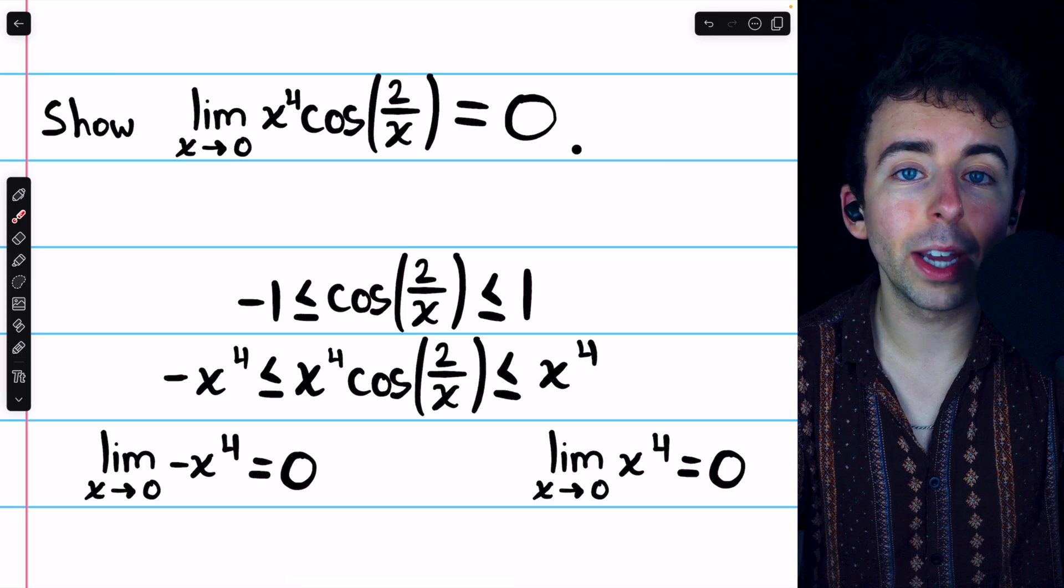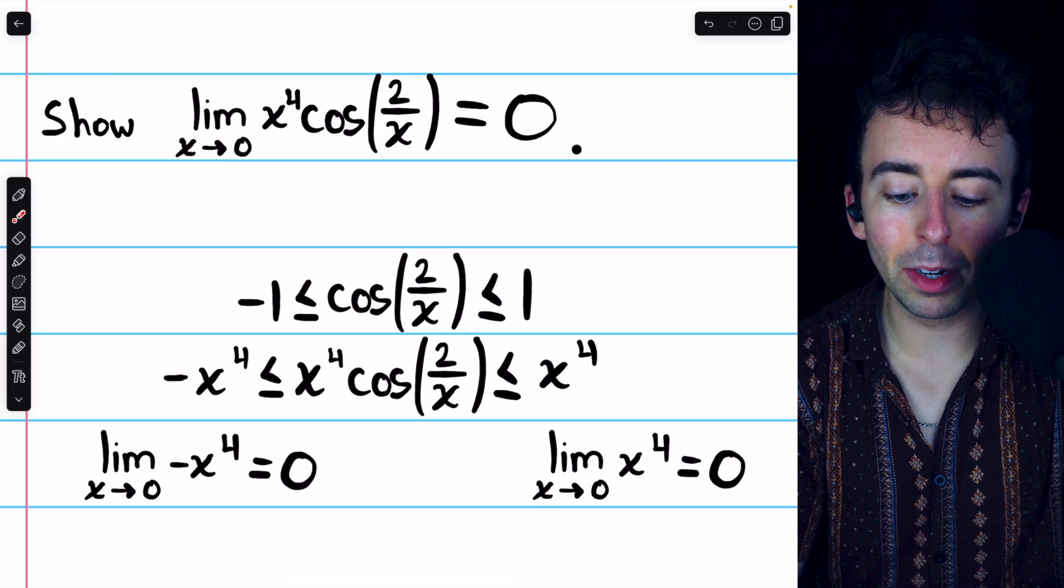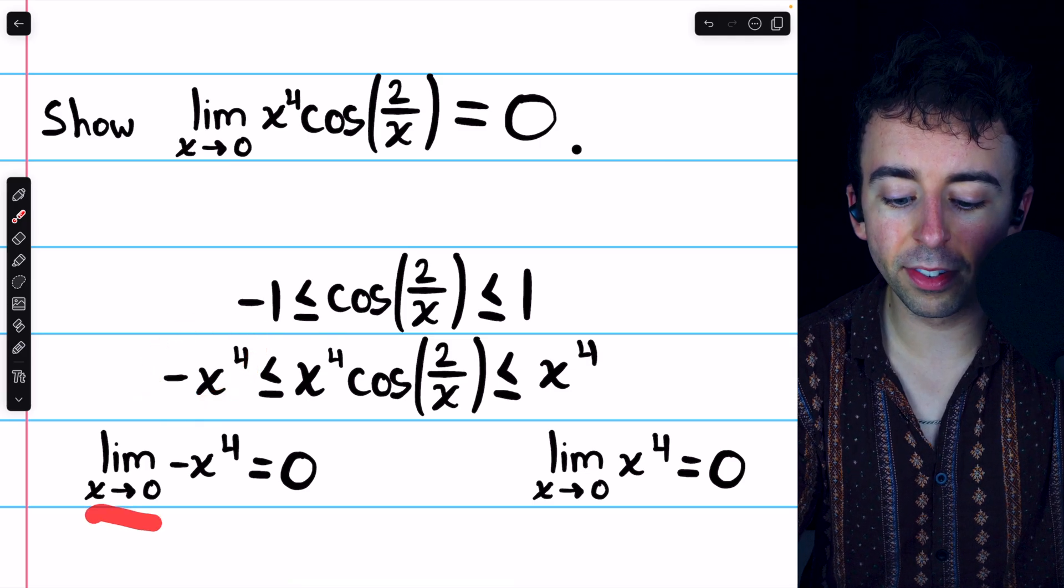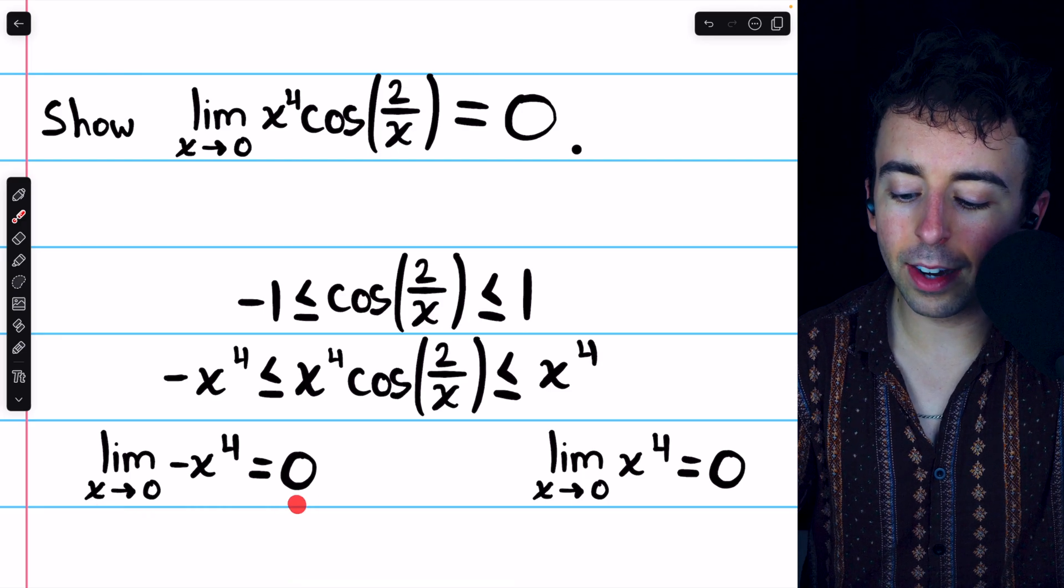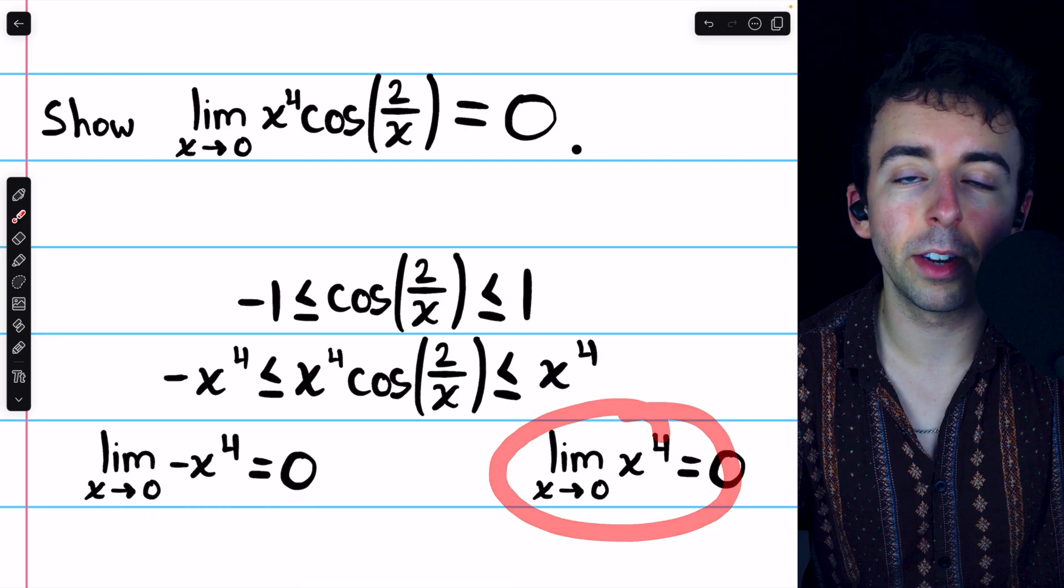As x approaches 0, these limits can be evaluated by substitution. The limit of negative x to the 4, as x approaches 0, is 0. And same thing with the limit of positive x to the 4.